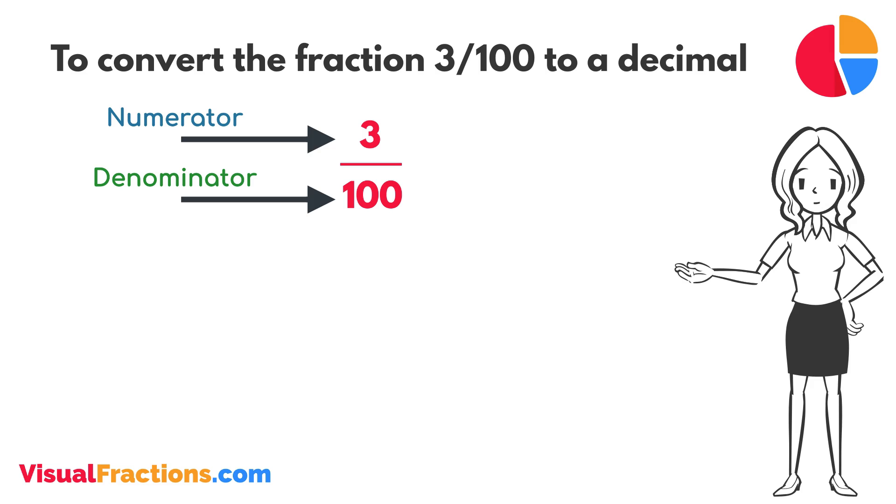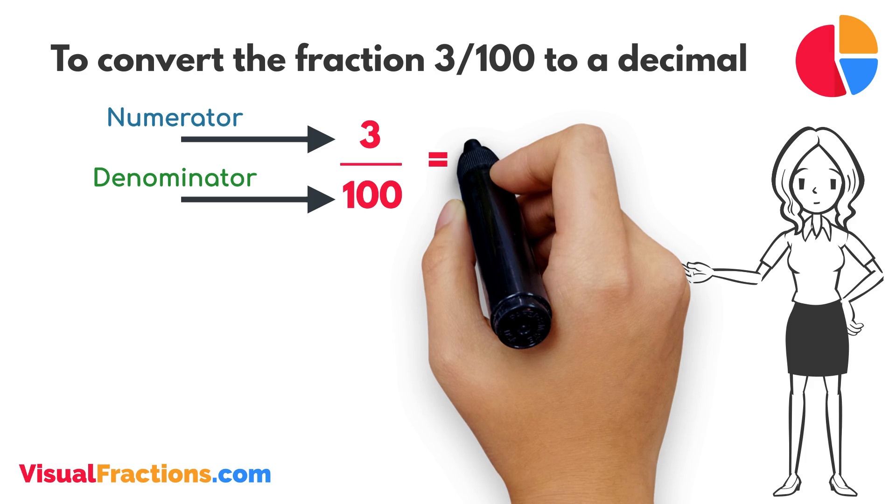So, we simply divide 3 by 100. The answer we get is 0.03.